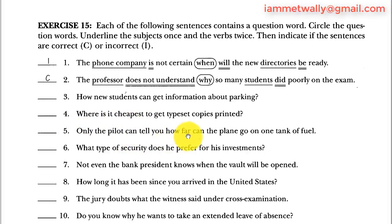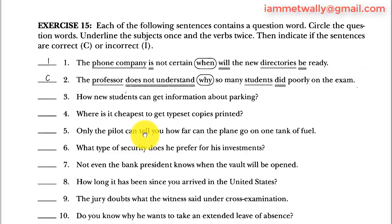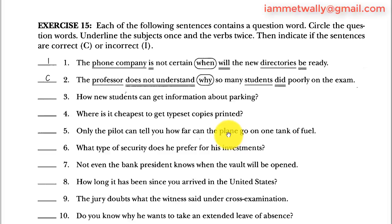Sentence 5: 'Only the pilot can tell you how far can the plane go on one tank of fuel.' 'The pilot' is the subject and 'can tell you' is the verb. Here 'how' is a connector word, not a question word, because it appears in the middle. 'Can' is an auxiliary verb and it is placed incorrectly because it precedes the subject 'the plane.' So the sentence is incorrect; it should have been 'how far the plane can go.'